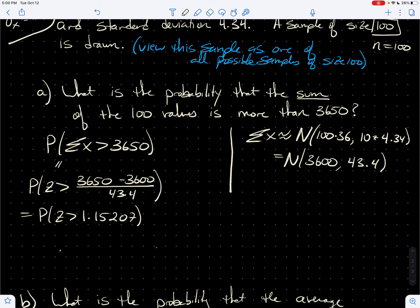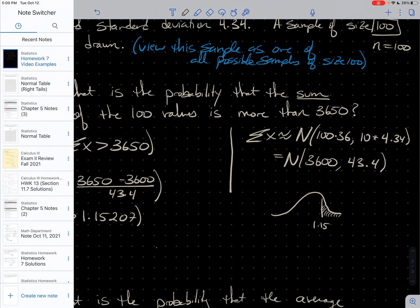So you've got, this is a right-hand tail, by the way. Maybe draw the picture in case you're not sure. 1.15, you want to be greater than that. So this is just a right tail. So thankfully, you've got a table for that.